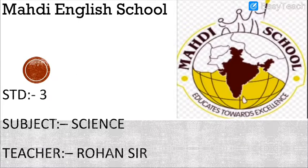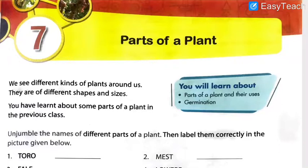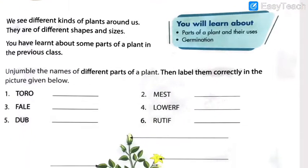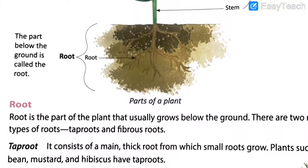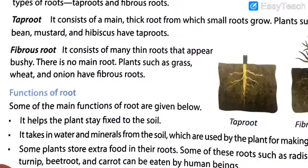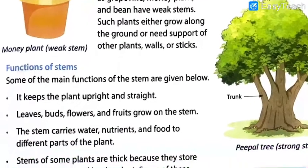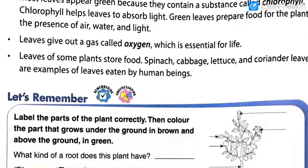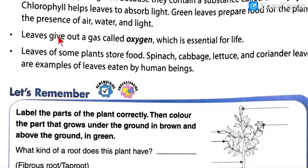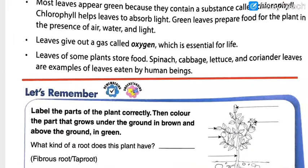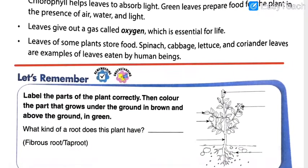Now let us continue with chapter number 7 we were doing in our science. We have started chapter number 7, 'Parts of a Plant.' In this chapter, we have completed 3 to 4 pages including the topics of roots, functions of root, stem, functions of stem, then leaves and the functions of leaves. In the previous lecture, we completed up till here. That is the reason why I am asking you to watch each and every lecture in proper sequence, so that you will be able to understand the present lecture.